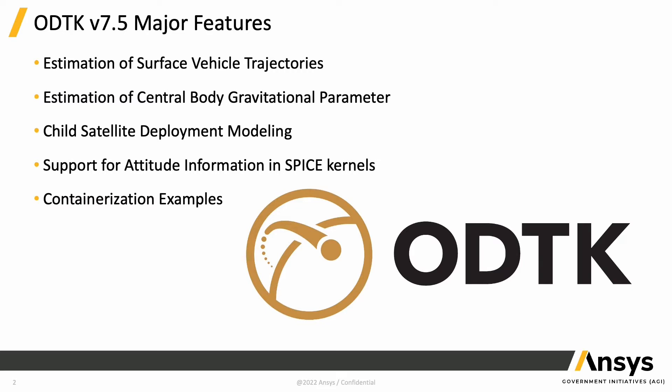We also have child satellite deployment modeling. The idea here is that we can keep one filter running when we have both a parent object and a child object. The parent object carries its own covariance, and when the child object separates it can initialize its covariance from the parent's covariance. The delta-v associated with that separation can also be factored into the filter on both the parent and child object.